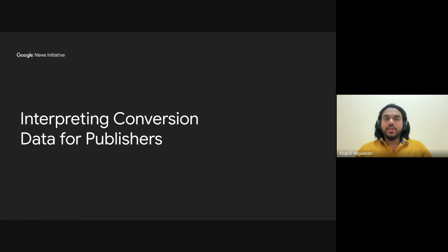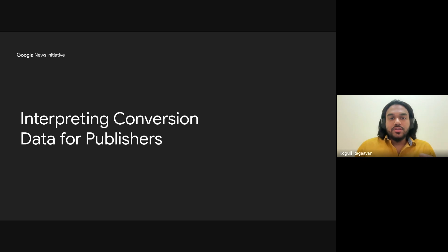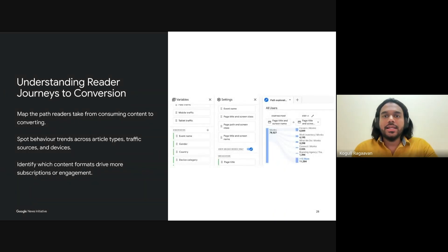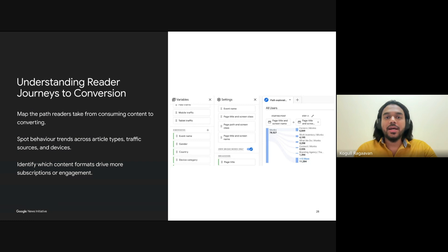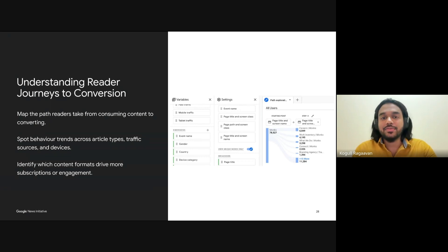In this section, we'll quickly dive into interpreting conversion data and how it plays a crucial role in driving business outcomes. As publishers, it's crucial to understand the entire journey the reader takes — from their first interaction with an article to when they finally convert, whether that's through subscribing to premium content, signing up for a newsletter, or engaging with ads. By using GA4 to map out these interactions, we can see which content types or traffic sources are most effective in driving conversions. Understanding these behavior patterns allows you to optimize your content strategy — if in-depth articles lead to conversions, perhaps you should allocate more resources to producing that type of content.